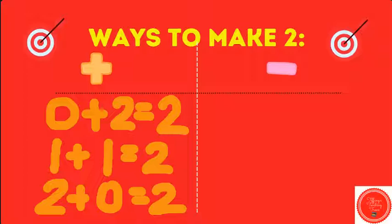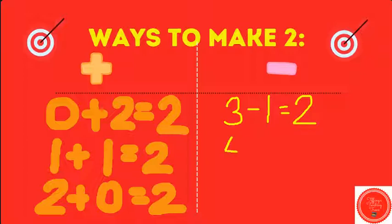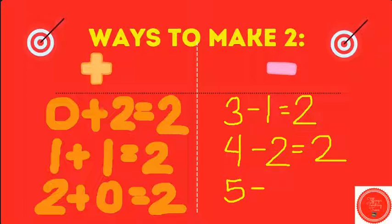Let's move to subtraction. What if I start with the number three? We're subtracting, so we're taking away now. What do I have to take away from three to land on the number two? I have to take away one. Three minus one equals two. What if I have the number four? If you hold up four fingers, how many do you have to take away to get to two? Four minus two equals two. What about five? Hold up five fingers — how many do you have to take away to get to two? Three. Five minus three equals two.